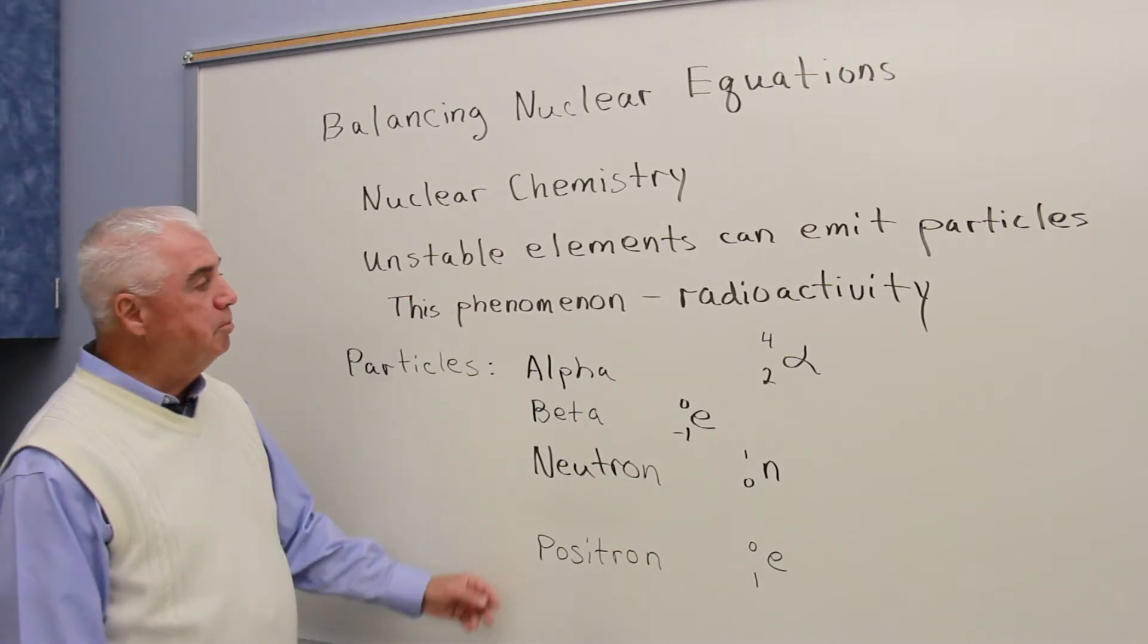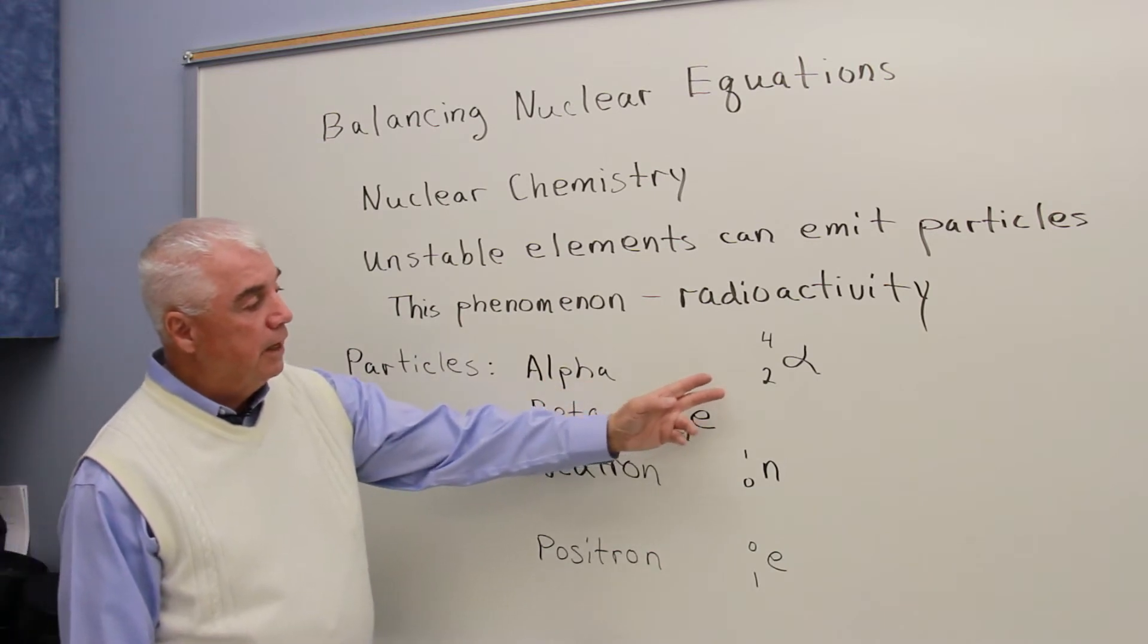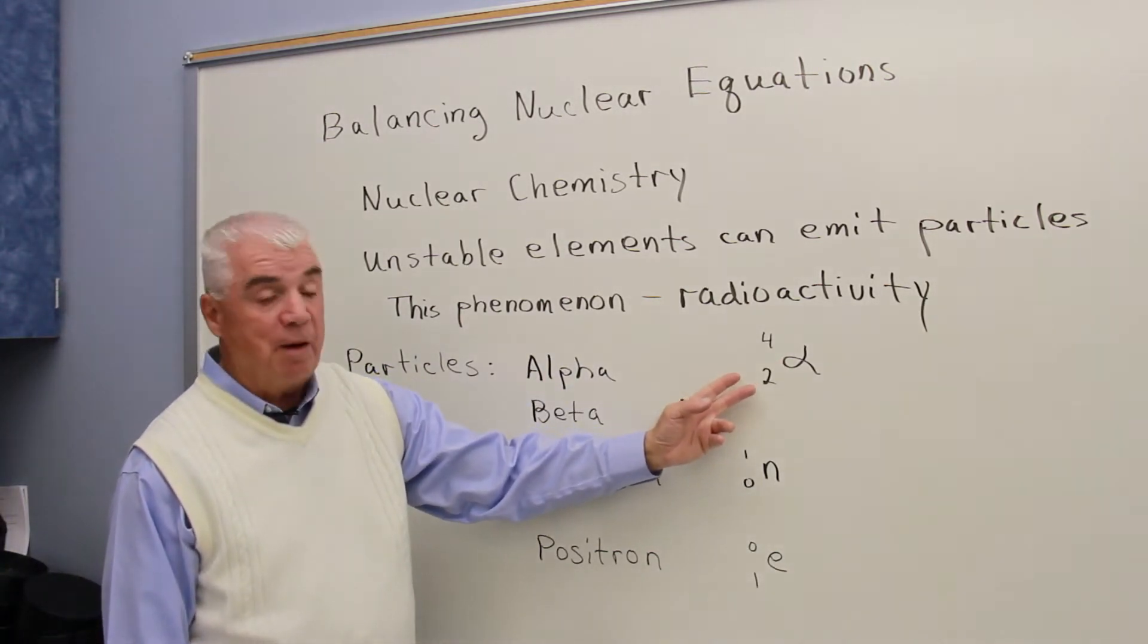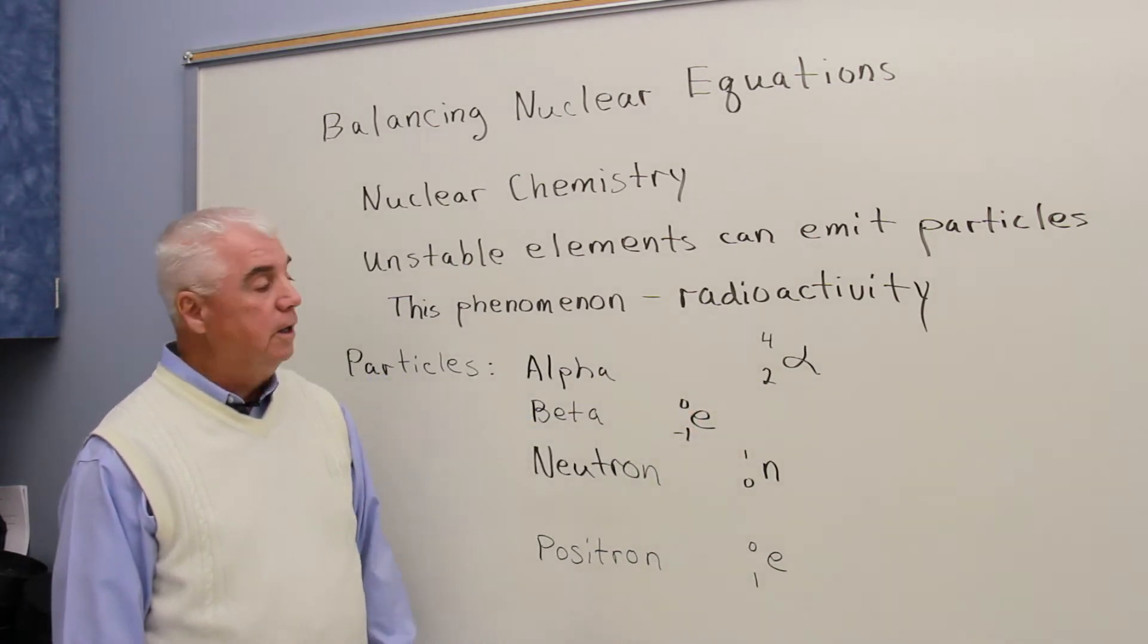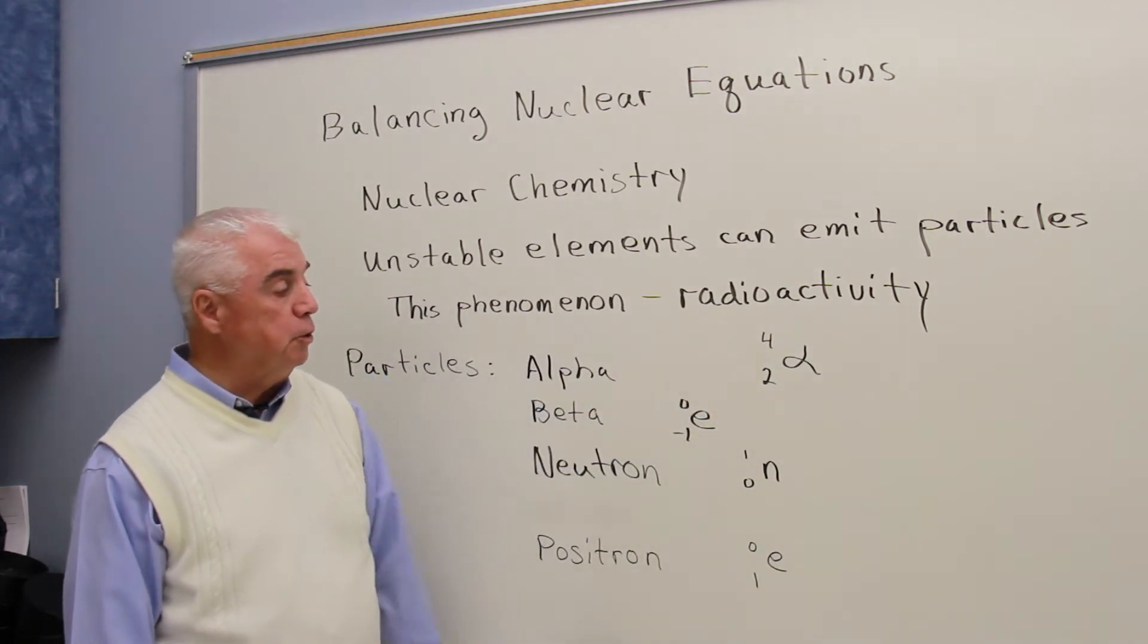And the common particles that we'll be dealing with are the alpha particle. Here I've symbolized it, the lowercase number is 2, that means two protons. The uppercase number 4, there must be two neutrons there as well, two protons and two neutrons.